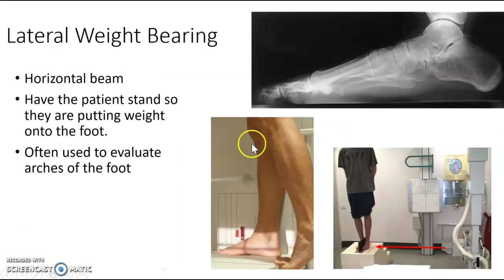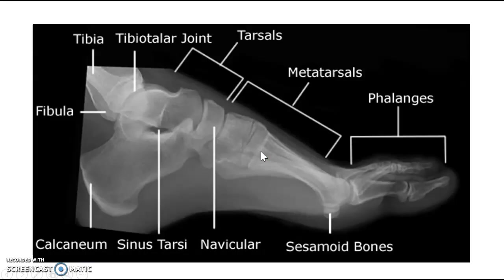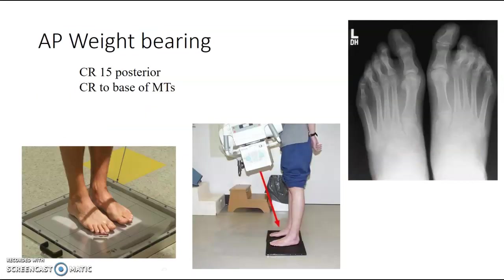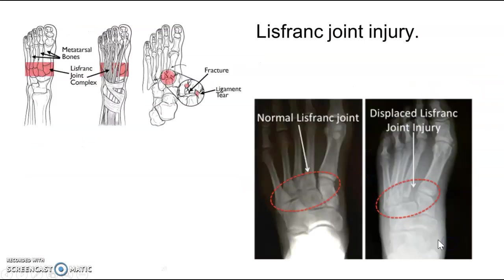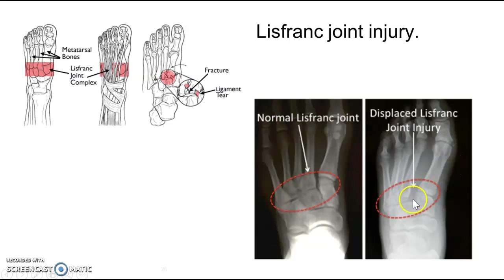For the AP weight-bearing, you utilize a 15-degree angle. Weight-bearing is most often used to evaluate arches or a Lisfranc joint injury — a separation right in that area. You can see how wide that area is; it's usually a ligament tear, and possibly includes a fracture.